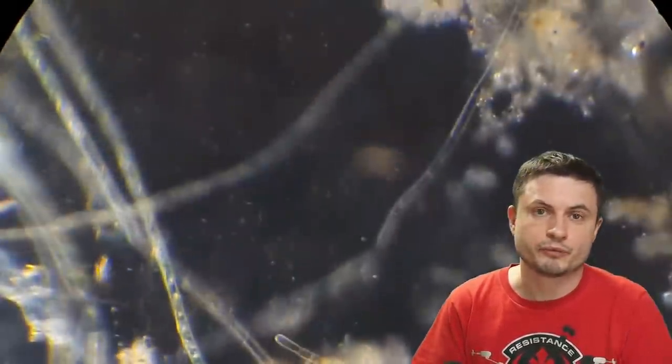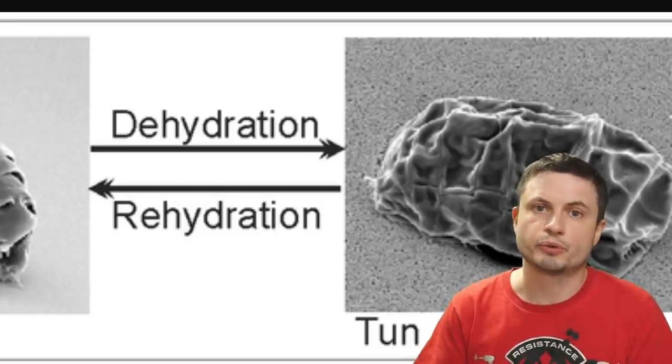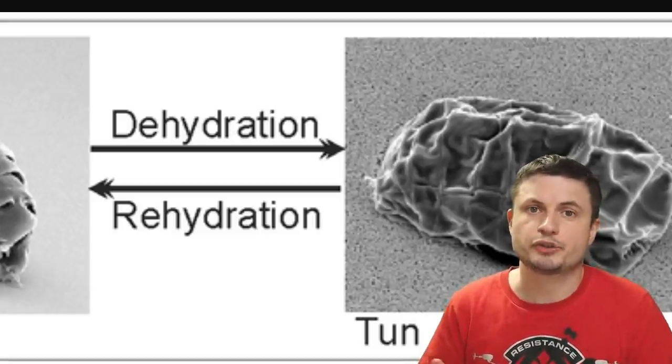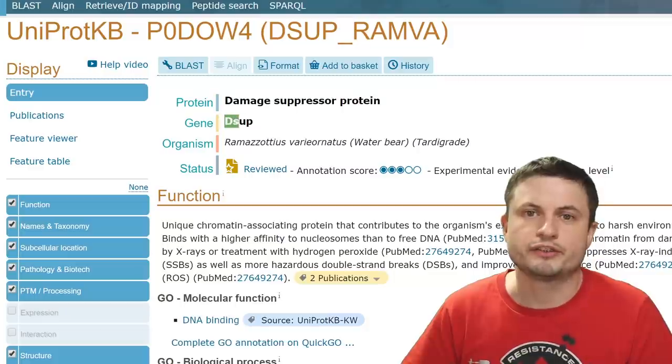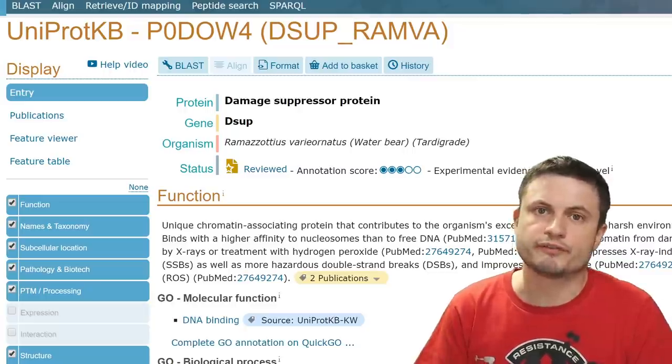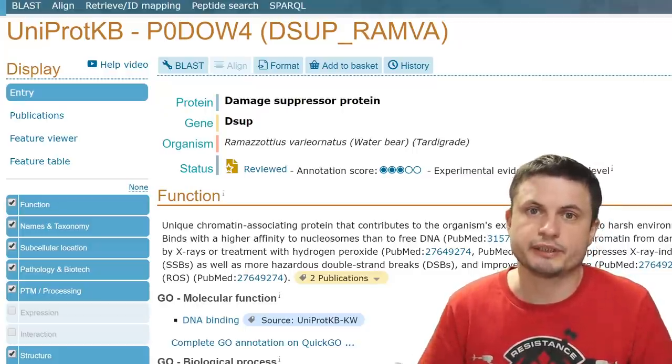When it comes to the survival of various types of radiation including some of the higher radiation like x-rays, we've actually discovered how they do this. We now understand that when they become the tun state, the dehydrated shriveled state that you see right here, a very interesting protein is activated inside of them that essentially protects their DNA from any sort of damage. Today this gene and this protein is known as Dsup, damage suppressor, and in the last 10 years or so a lot of different research has focused on trying to understand how this works and if we can one day use this to protect ourselves in outer space as well.